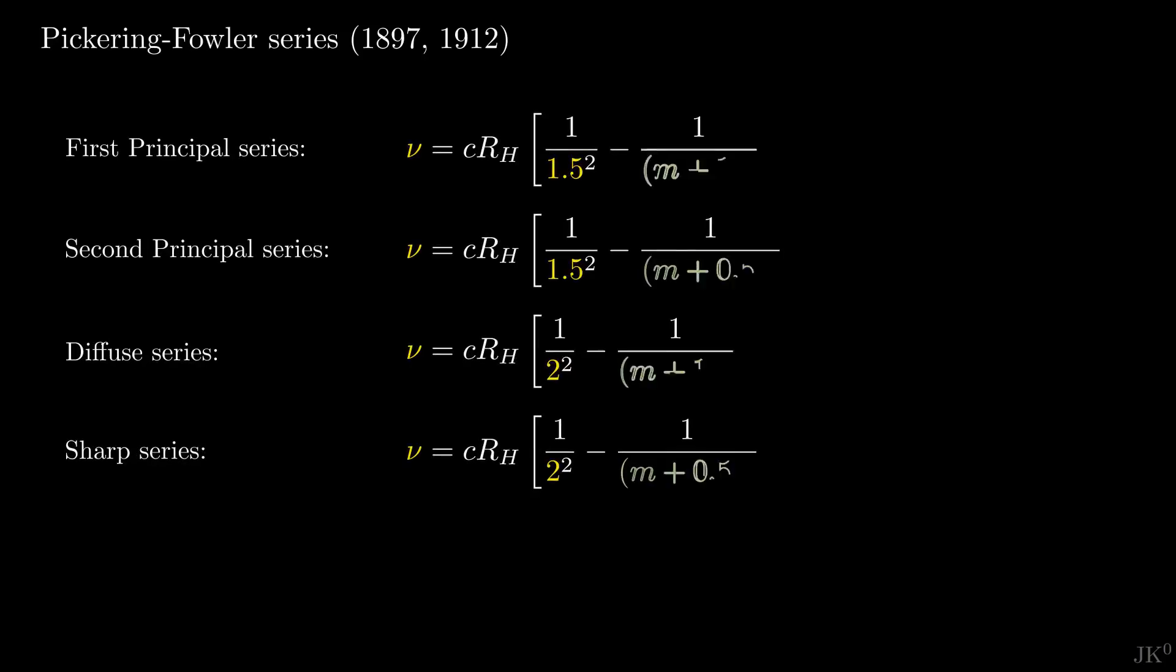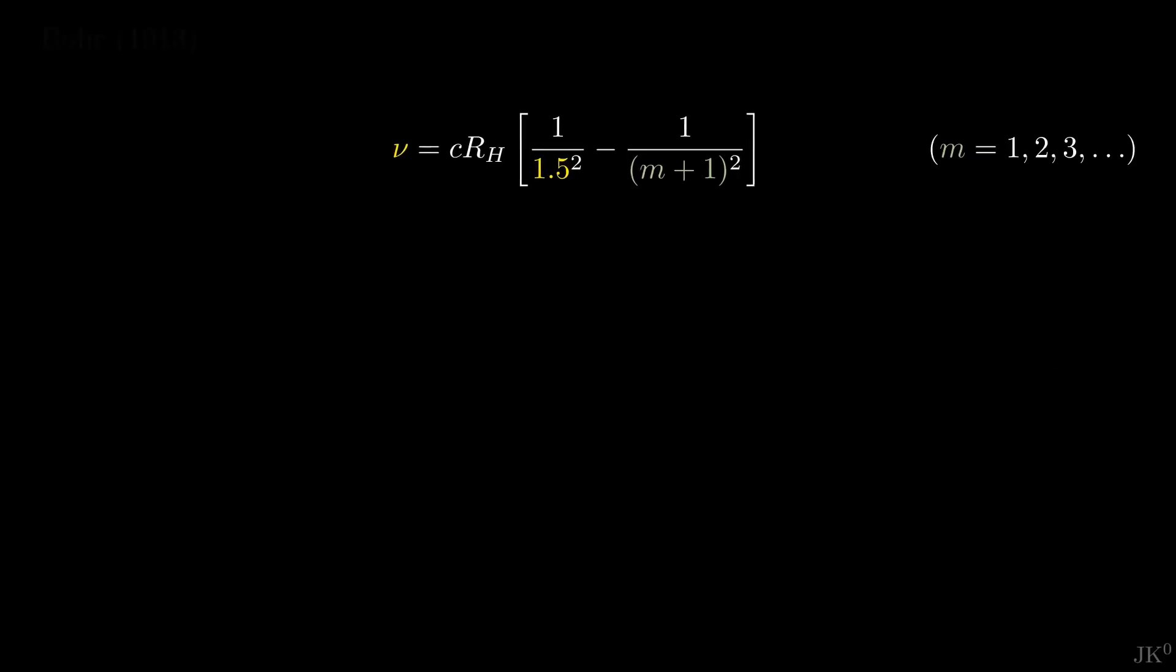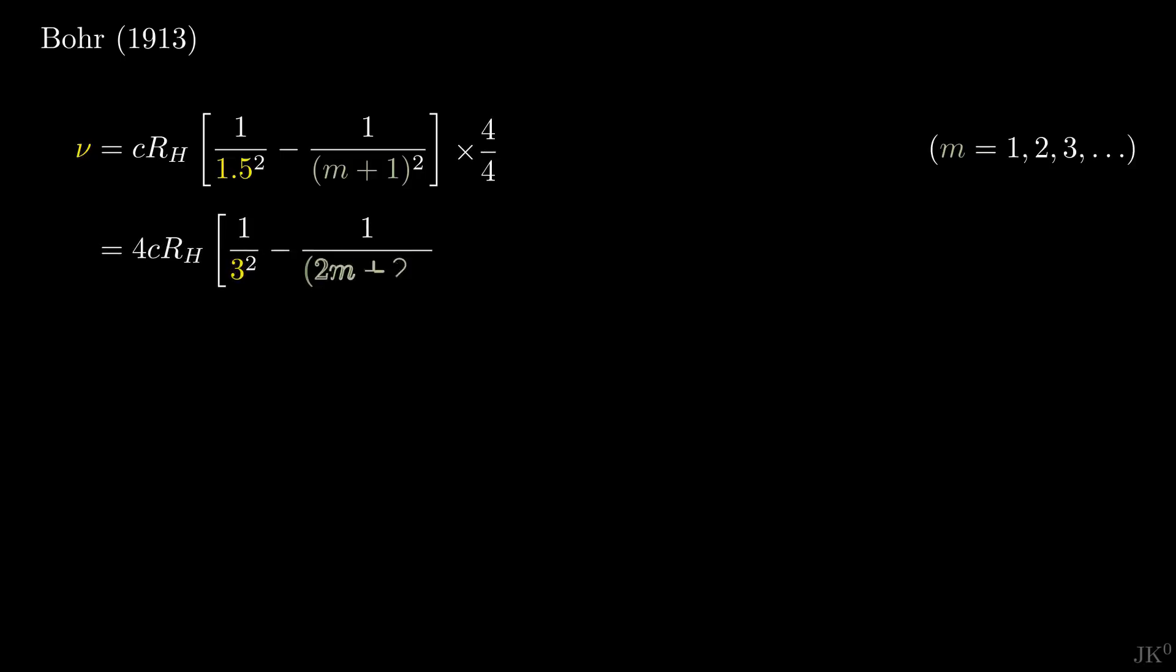These are Fowler's formulas, where I'm rewriting them with nu for the frequency of the spectral lines and R_H for Rydberg's constant instead of hn and c used by Fowler. Let's take the first relation and simultaneously multiply and divide by 4. We are effectively just multiplying by 1. With this, the half integer indices disappear.